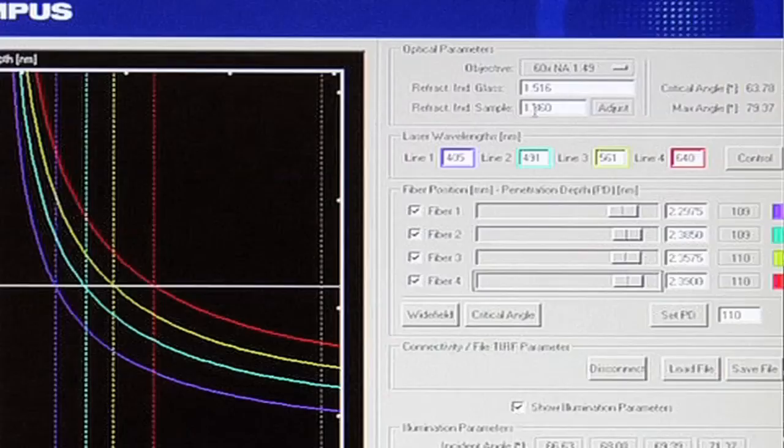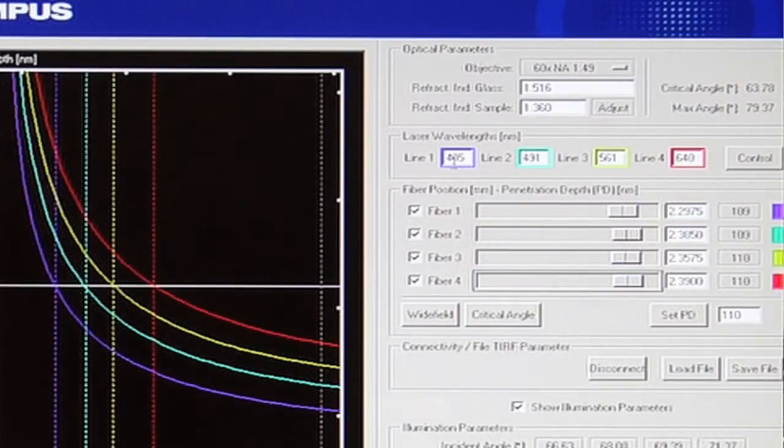Each of the curves that you can see come in there are for the specific wavelengths that we're using. So the system is set up for four different wavelengths, 405, 491, 561, and 640. So they're color coded there with the curve on the left hand side being the 405 moving towards the 640 on the right hand side. And this actually represents what I was saying earlier, how critical it is to have different incident angles for different wavelengths. And that's really what this graph is showing.